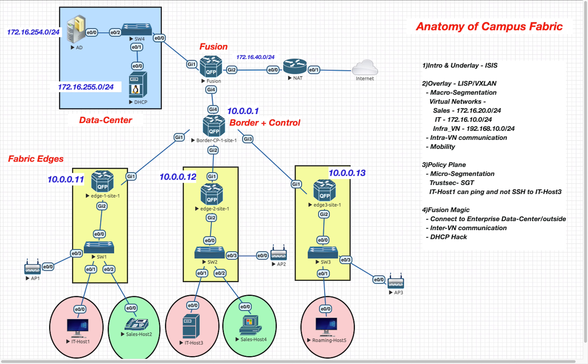Welcome back. Just a bit of context: this video is part of the playlist called 'Anatomy of Campus Fabric' on the channel. In this video we are discussing LISP and VXLAN — the two protocols needed for the campus fabric. A quick recap: we have configured the underlay ISIS protocol and done macro segmentation, creating VRFs — the Sales VRF and the IT VRF. Let's proceed with the overlay configuration. I'd recommend checking the rest of the series videos first for more clarity.